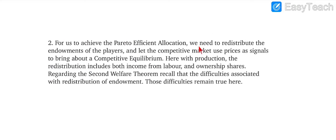To achieve Pareto efficient allocation, we need to redistribute the endowment of the pair, and let competitive markets use prices as signals for bringing about competitive equilibrium. Redistribution of production includes both income, labor, and ownership shares. The second welfare theorem shows that the difficulties associated with the redistribution of endowment - these difficulties remained true here.